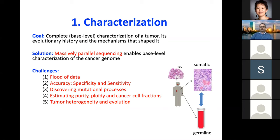We would like to do this for every cell in the body of the patient. That is still not feasible, but that would be the complete characterization — fully understanding what happens in the genome and epigenome of every cell in the cancer. The solution is massively parallel sequencing, also known as next-generation sequencing, that enables base-level resolution of the genome. There are many challenges that we have been addressing in the past decade or so.